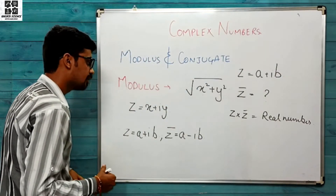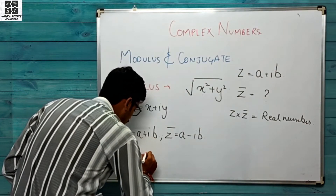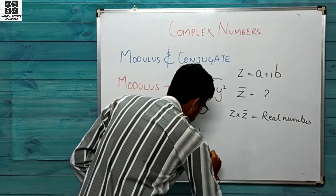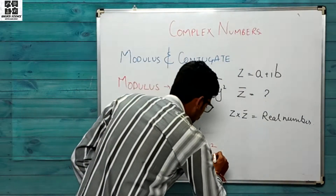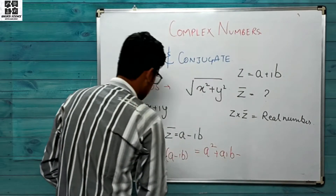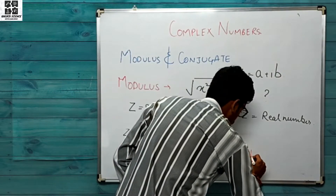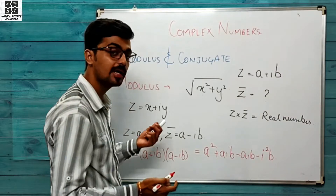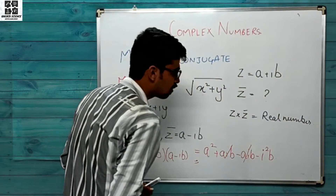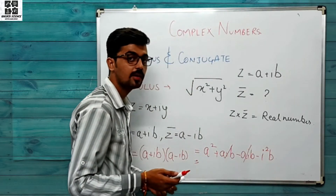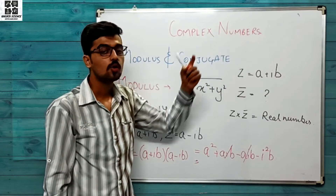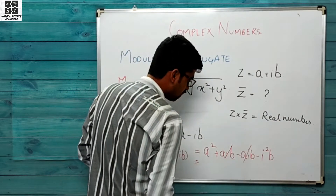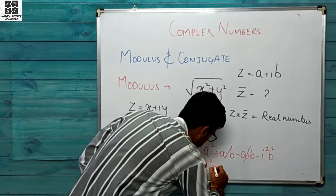Ab agar hum in dono ko multiply karte hain toh kya result milta hai? So if we see (a + ib) multiplied with (a − ib), we get a², then a·ib minus a·ib, and minus i²b². The middle terms cancel out. i² is always equal to −1, so minus minus cancel ho jaayega, and this will be equal to a² + b².